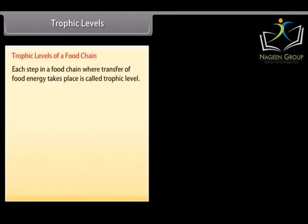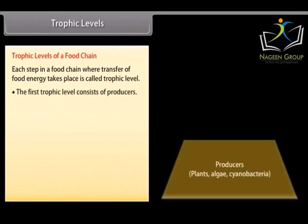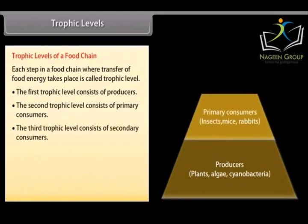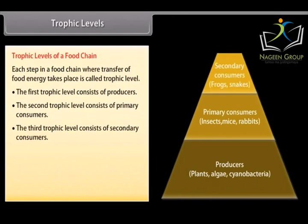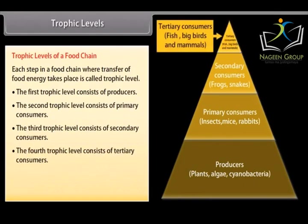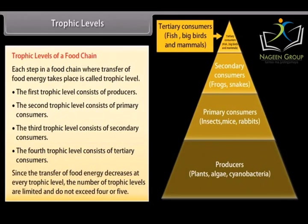Each step in a food chain where transfer of food energy takes place is called a trophic level. The first trophic level consists of producers, the second of primary consumers, the third of secondary consumers, and the fourth of tertiary consumers. Since the transfer of food energy decreases at every trophic level, the number of trophic levels is limited and does not exceed four or five.